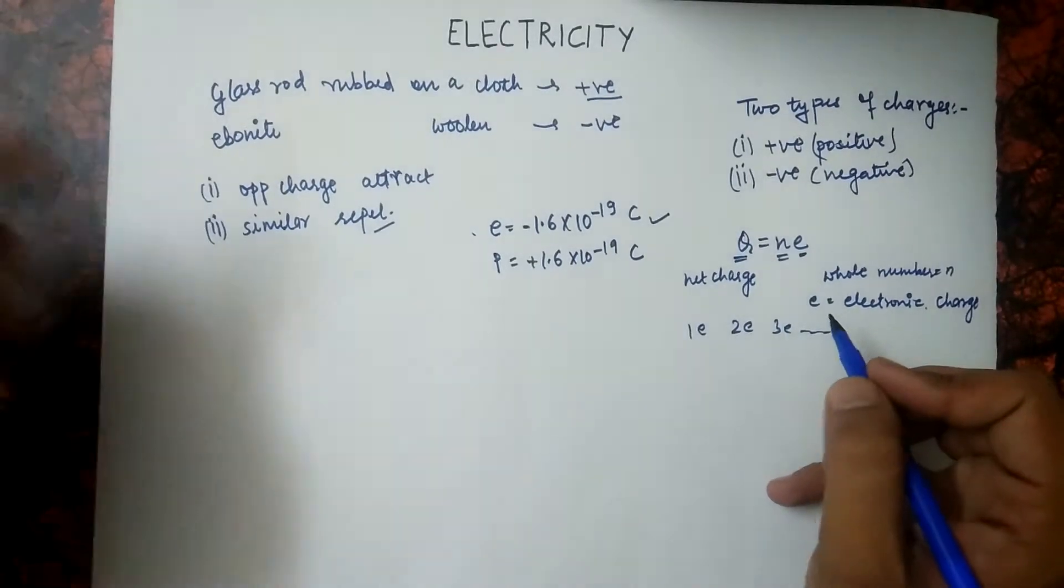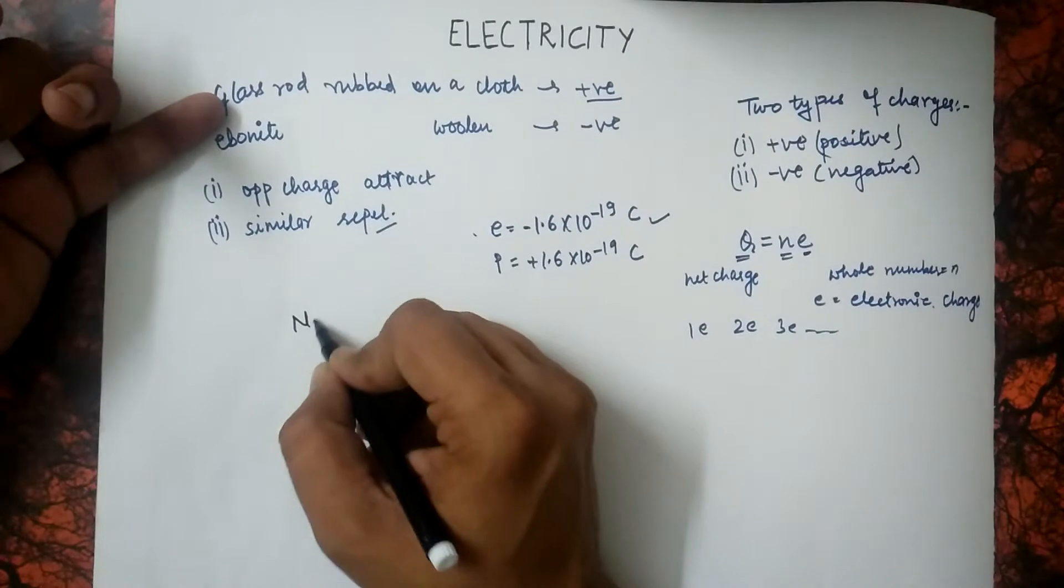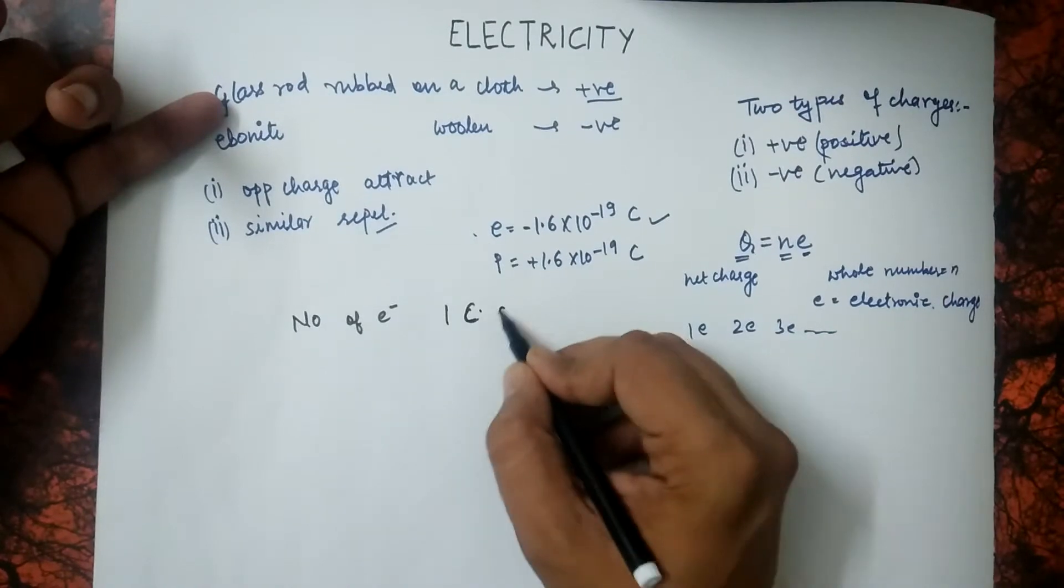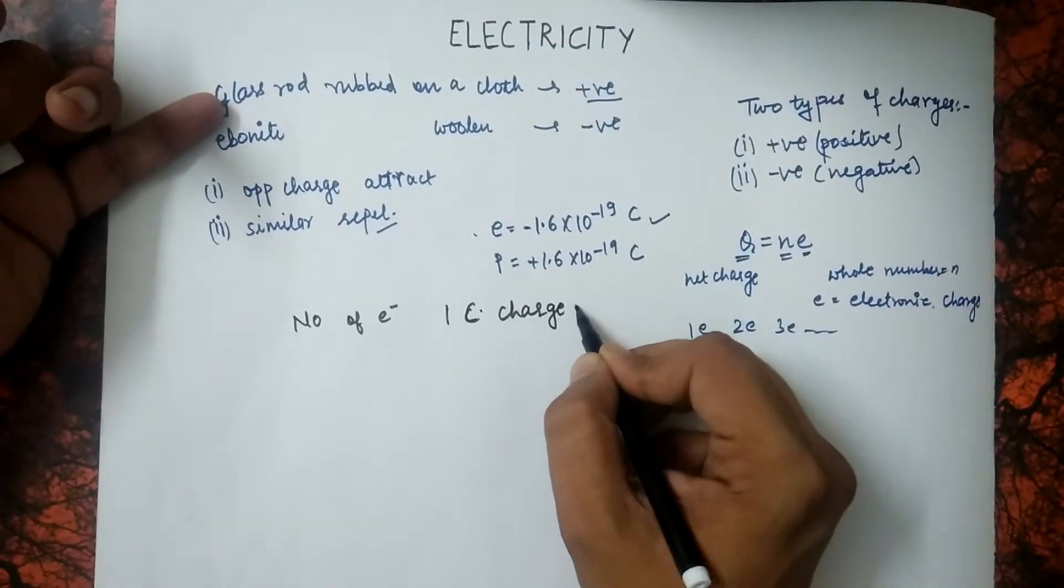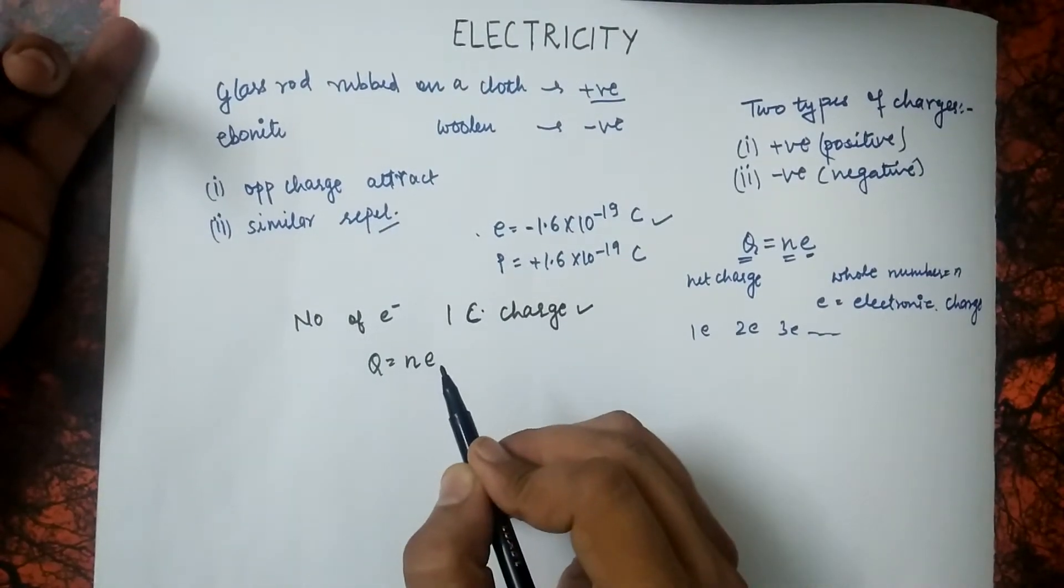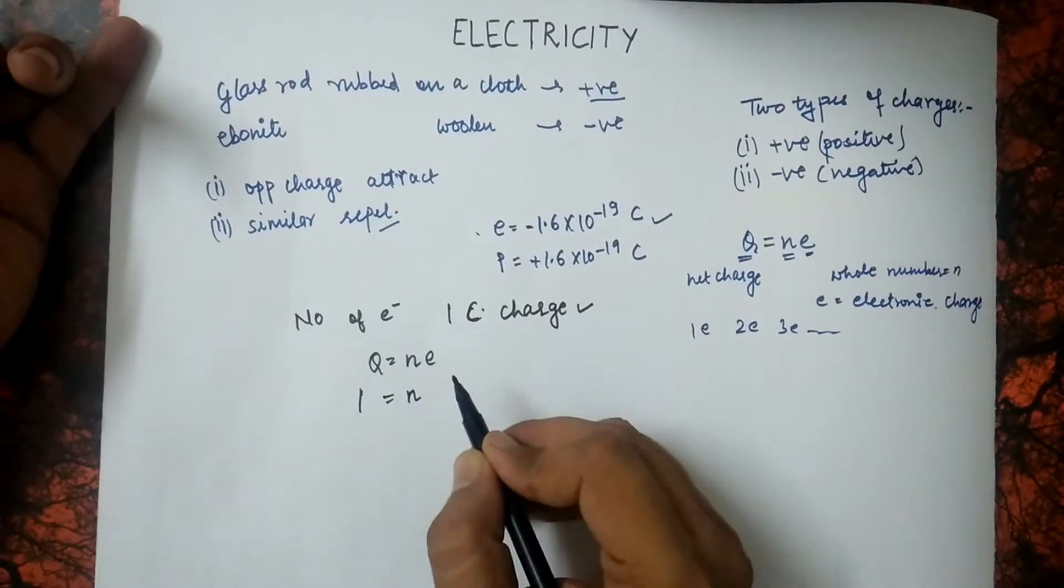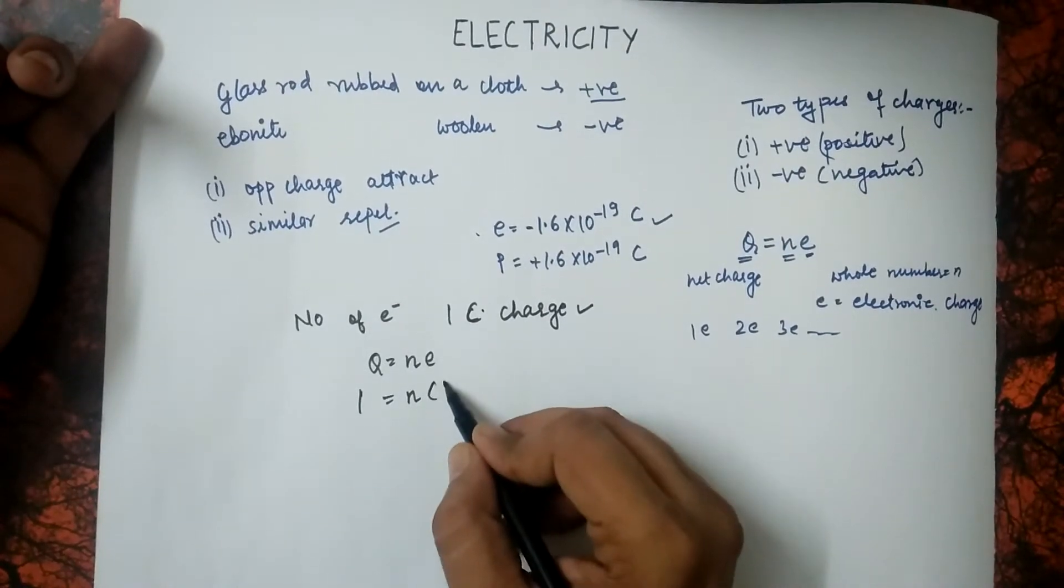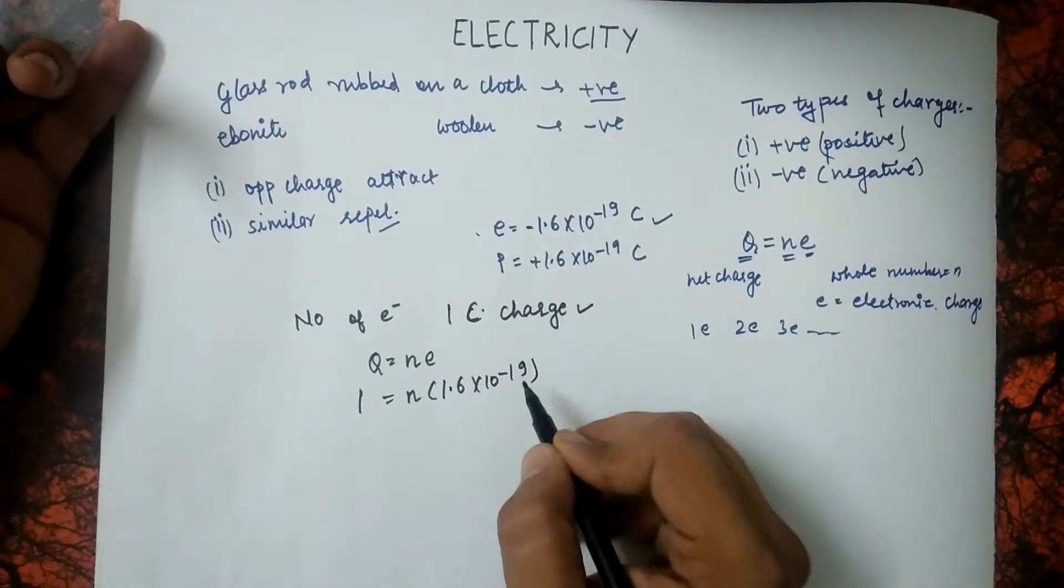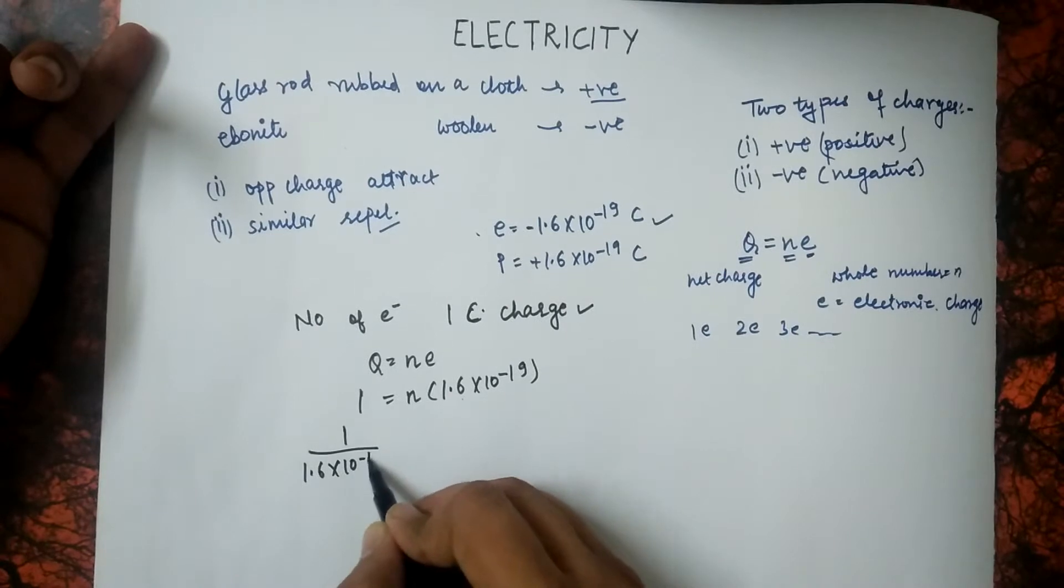Now, let us do a numerical. The problem is that we have to find number of electrons for 1 coulomb charge. Since we know that Q equals to NE, and the charge given is 1 coulomb, we have to find number of electrons. Electronic charge is 1.6 into 10 to the power minus 19. We would take this to the denominator, 1.6 into 10 to the power minus 19.